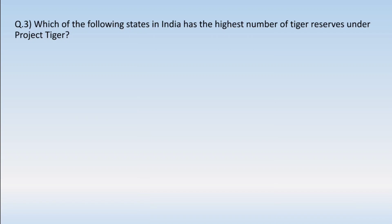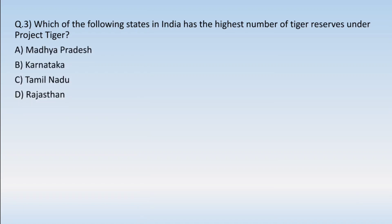Question number three: which of the following states in India has the highest number of tiger reserves under Project Tiger? Options are: (A) Madhya Pradesh, (B) Karnataka, (C) Tamil Nadu, or (D) Rajasthan. The correct option is Option A — Madhya Pradesh has the highest number of tiger reserves in India.